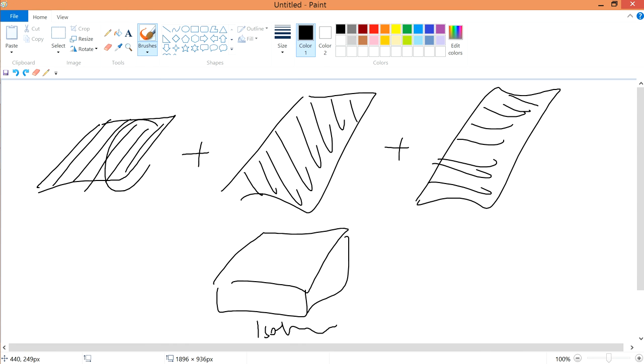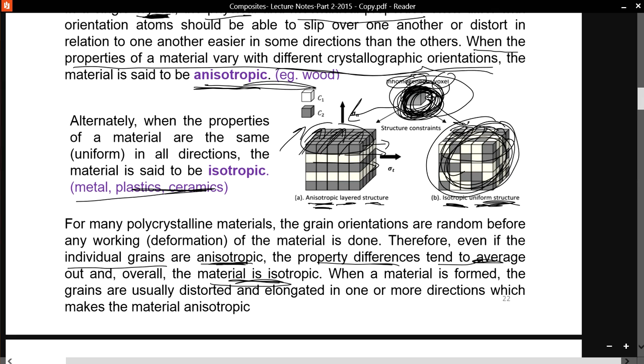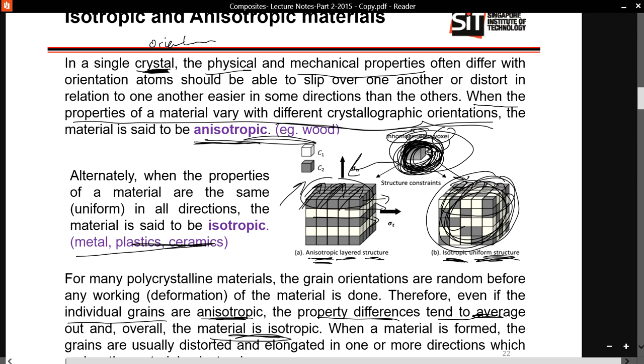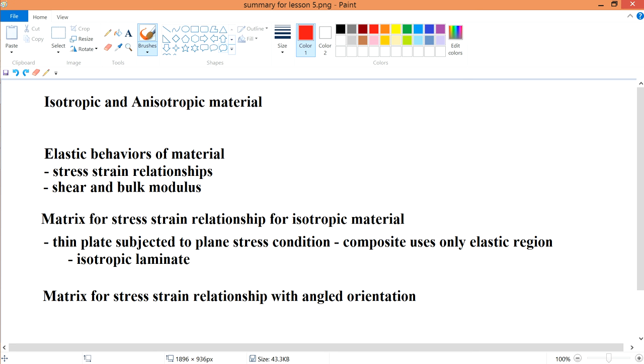Because all of them are arranged in different manners. But if you laminate them all together, you will get an isotropic material. So this is another thing to discuss that is pretty useful.